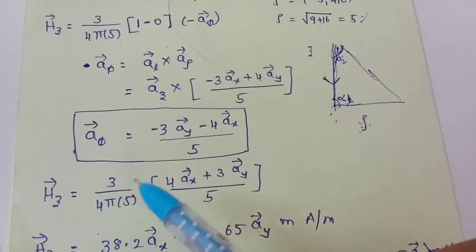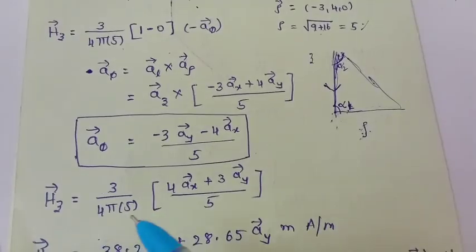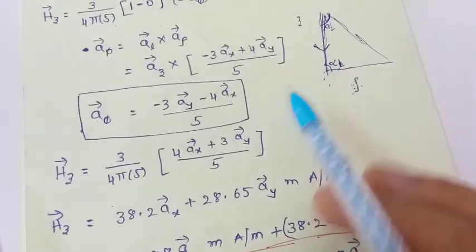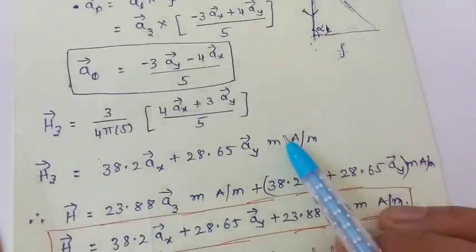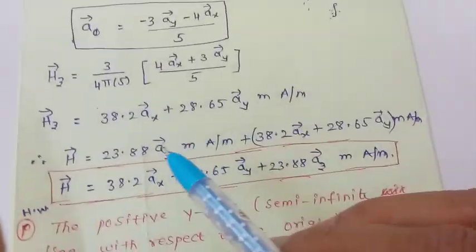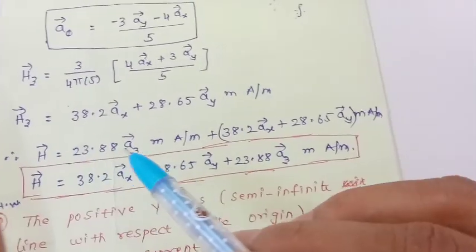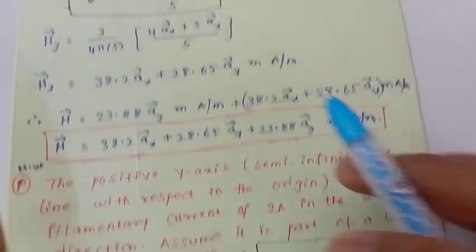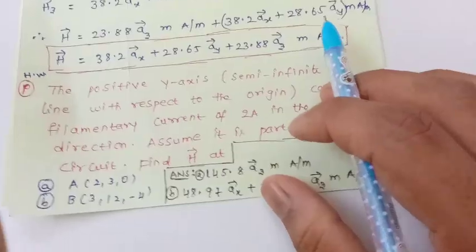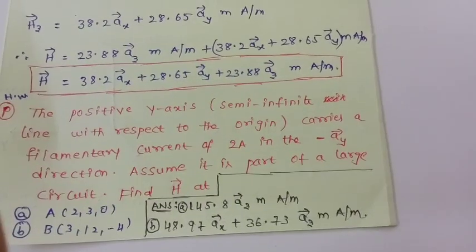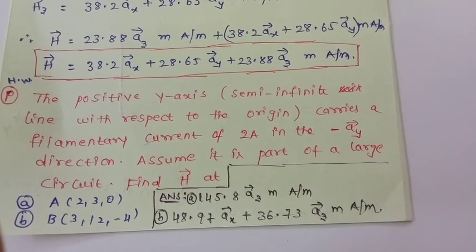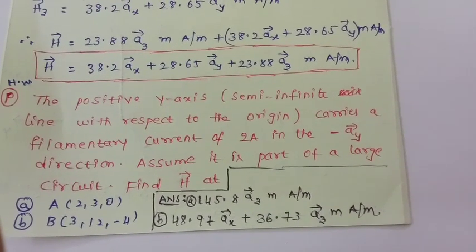H_z equals 3 divided by (4π × 5), multiplied by (1 − 0), giving the final value. By combining H_z and H_x, we get the overall magnetic field intensity. This final combined result is the answer to the problem, and the remaining part is left as a homework exercise.